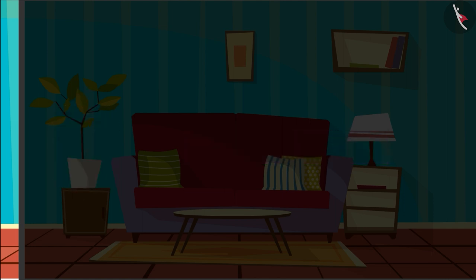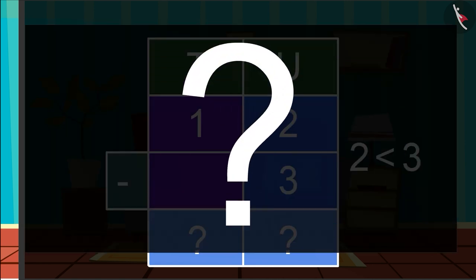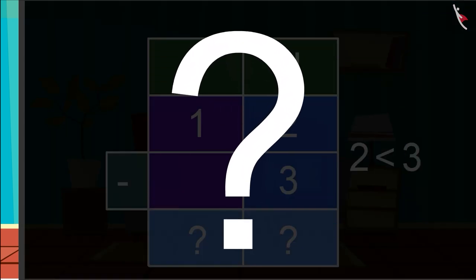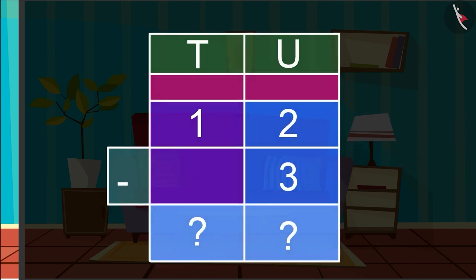In vertical form we can write like this. First we will subtract the numbers written in the units place. We cannot subtract 3 from 2 because 2 is a smaller number than 3. Children, can you tell me how can we solve this? Absolutely right, we can solve this with the help of borrowing. We have to take one from the tens number.